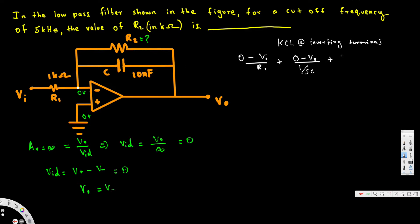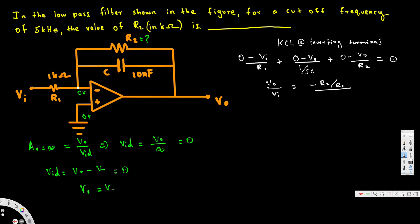Continuing with KCL: (0 minus Vo) divided by R2 equals zero. From this relationship we can create the equation for Vo over Vi. If we derive the equation that comes out to minus R2 over R1, divided by 1 plus — this should be R1 right here — giving us: minus R2 over R1, all over (1 plus 1 over sC·R1).